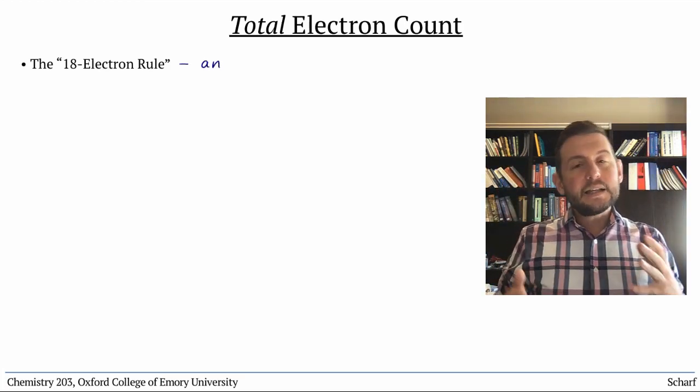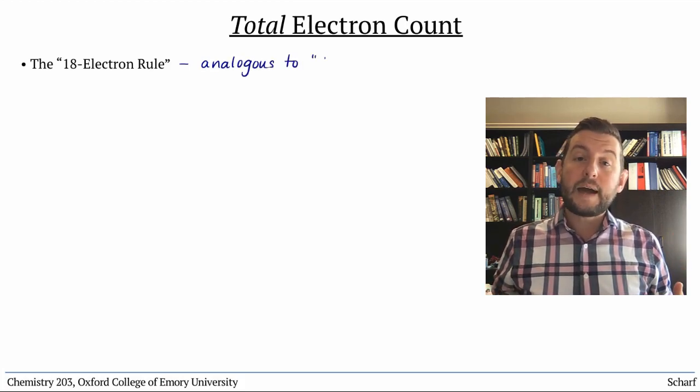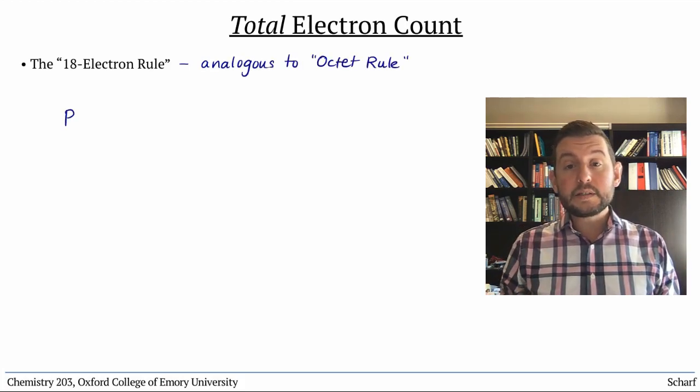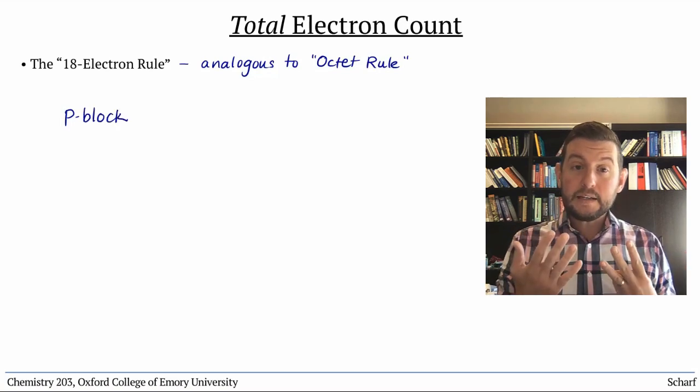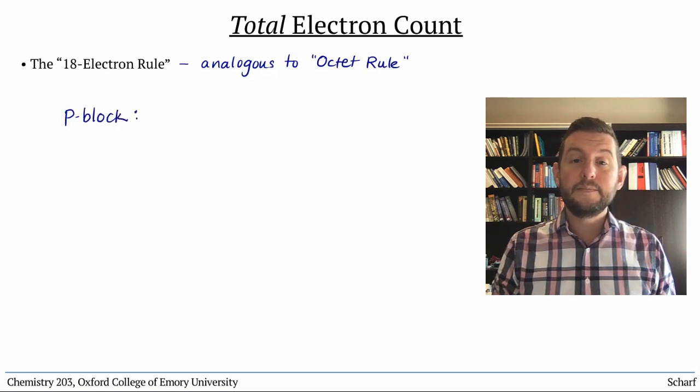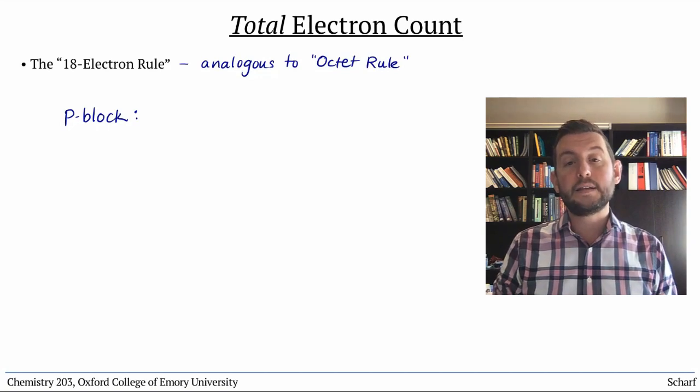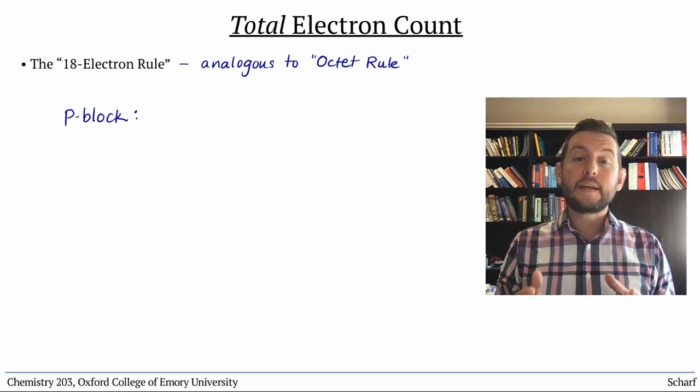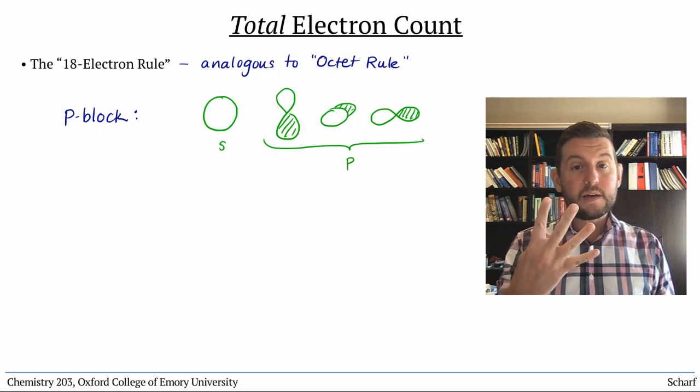which is analogous to the octet rule for atoms in the P block. P block elements tend to prefer to have eight total electrons surrounding them so as to have completely full valence orbitals. Remember their valence orbitals are an s and three p orbitals.